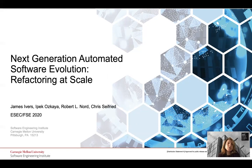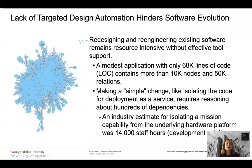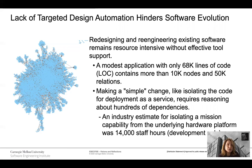My name is Ipek Özkaya and I'm going to be presenting our vision in next generation automated software evolution, which we're calling refactoring at scale. Lack of targeted design automation hinders software evolution. Redesigning and re-engineering existing software gets very resource intensive very quickly, and such tasks are not uncommon for industry software. A modest application with only 68,000 lines of code contains more than 10,000 nodes and 50,000 relationships. For a simple evolution task, a developer needs to understand what nodes to change and what relationships to resolve, and this gets very resource intensive without automated tool support, as well as error prone.